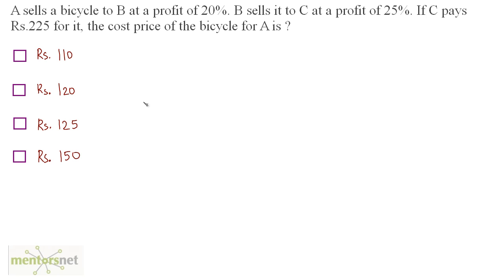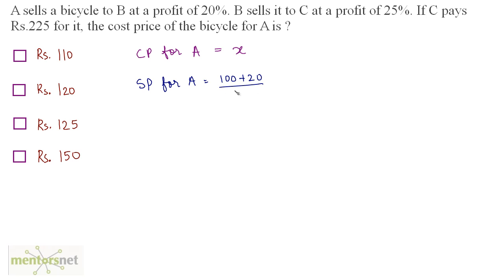A sells a bicycle to B at a profit of 20%. B sells it to C at a profit of 25%. If C pays Rs. 225 for it, what is the cost price of the bicycle for A? Let us assume the cost price for A is X rupees. A sold it to B at 20% profit, so the selling price for A equals (100 + 20)/100 × X = 120X/100. This is also the cost price for B.